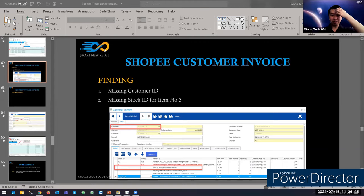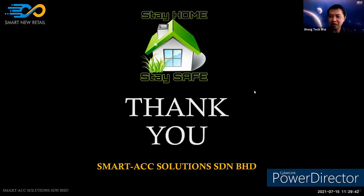Question: when manually creating an invoice and selecting the stock ID, will the price follow the Shopee price? No — when manually creating the invoice by selecting the stock ID, the price will follow the price in stock maintenance, not the Shopee price. You must manually change the price to match the Shopee price.